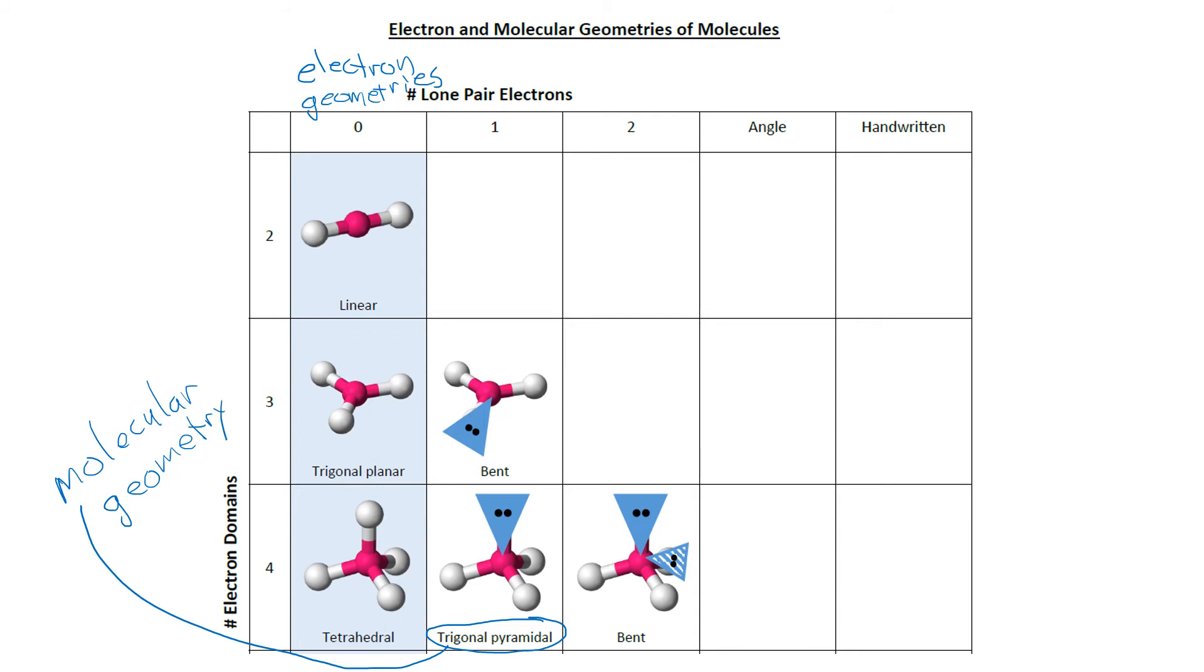When we're trying to look more closely at these shapes, there are bond angles associated with each of them. In the case of the linear geometry, since it's a line, that bond angle is 180 degrees, and that bond angle refers to the angle formed around that central atom.